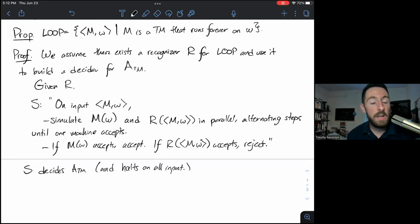So S will take as input M and W and it'll run these two simulations in parallel. By definition, R is a recognizer. So it will halt and accept if M runs forever on W. In other words, if M halts, R might run forever, but we know M(W) will halt. If R halts, then M will run forever, but we know R halts. So one of these two things is guaranteed to halt. I should add an additional condition. If M(W) rejects, we'll reject. Just to cover the case where M(W) rejects and R(M,W) runs forever.